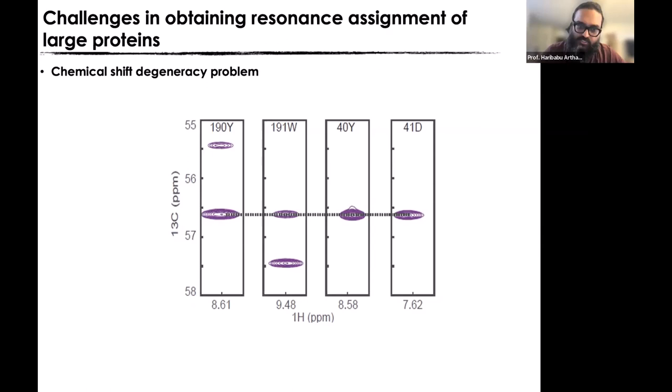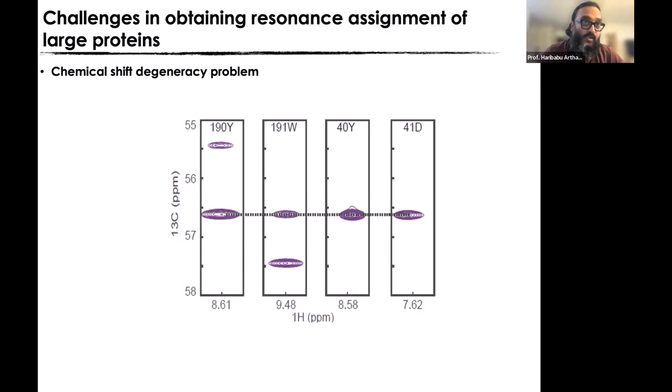What happens when you go to larger systems? Sitting on a particular resonance and asking where is my C-alpha-minus-1, there are going to be about four other resonances raising their hands saying they're your C-alpha-minus-1, but only one is the right answer. This is what we refer to as chemical shift degeneracy. It's like asking a name question in a class of three versus a class of 1,000 people — with more people, more hands go up. That's exactly what happens with larger proteins.